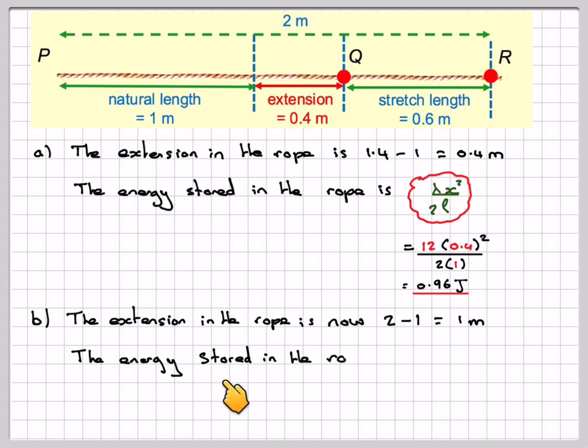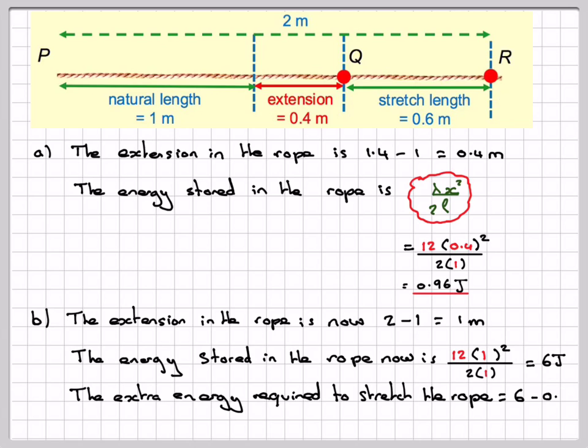The energy stored in the rope now is 12 times 1 squared over 2 times 1, which gives you 6 joules. We're asked to find the extra energy needed to go from here to here, so that's going to be 6 joules minus what we calculated in the first part, which is 0.96, which is an answer of 5.04 joules.